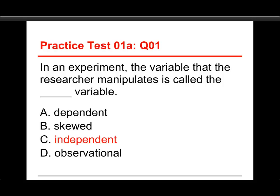An observational variable is just something that happens on its own, like when you do a survey. So the answer to this one is C — the independent variable is the one that is manipulated.